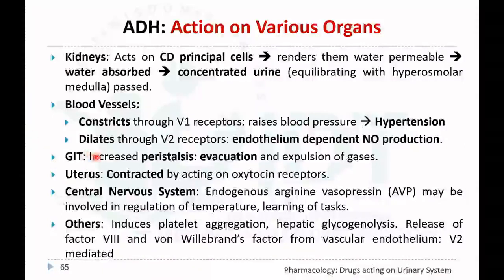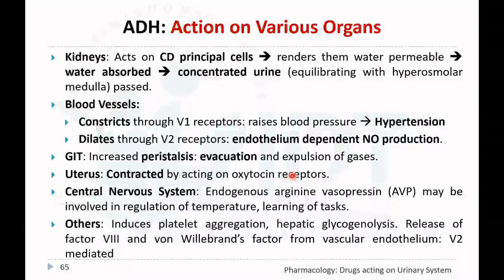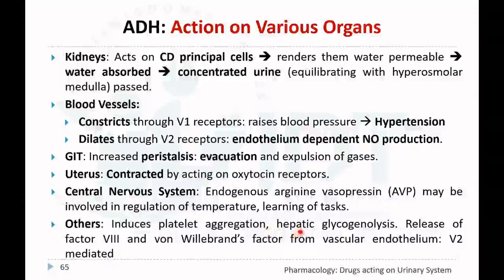ADH in the gastrointestinal tract increases peristalsis, leading to evacuation and expulsion of gases. ADH in the uterus contracts the uterus by acting on oxytocin receptors. In the central nervous system, endogenous arginine vasopressin may be involved in the regulation of temperature and learning of tasks. ADH also induces platelet aggregation and increases hepatic glycogenesis.